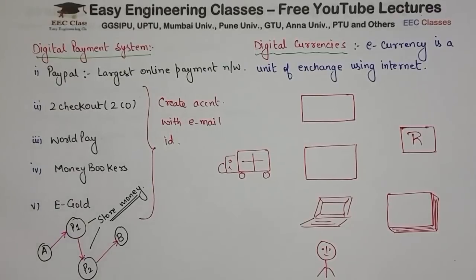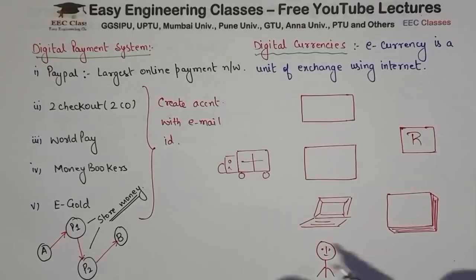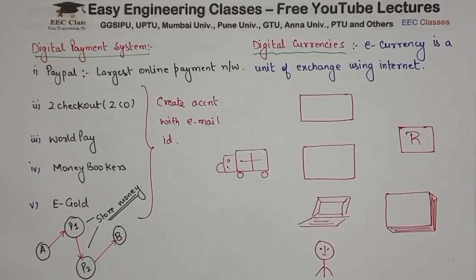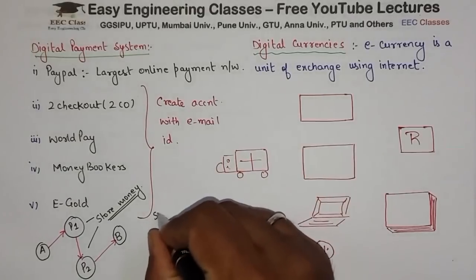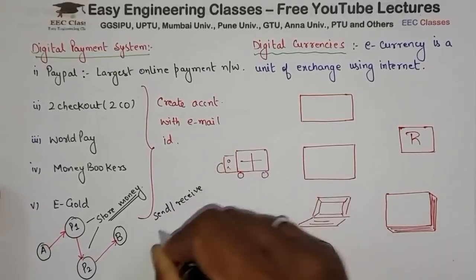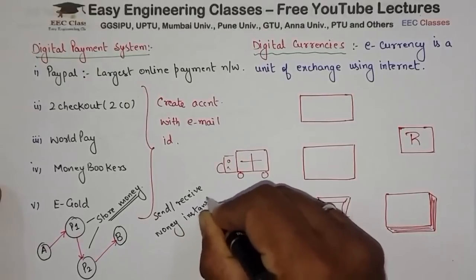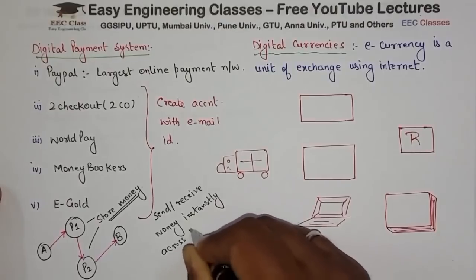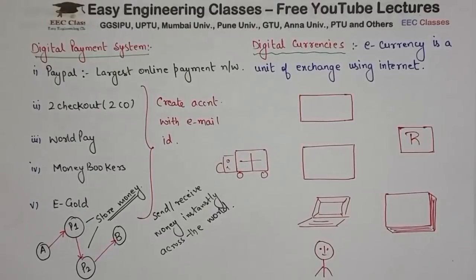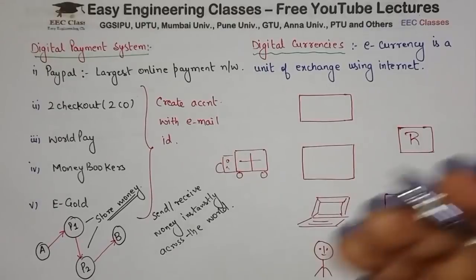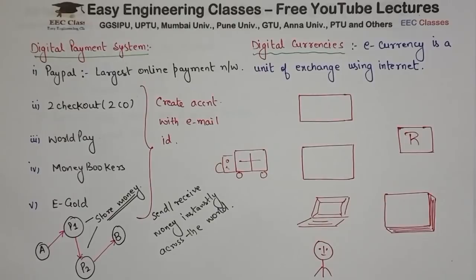Now, digital currency — what is it? It is any e-currency or electronic currency whose exchange happens over the internet. It is not actual physical currency, but you can redeem it in real currency. Its benefits include: you can send and receive money instantly across the entire world, collect real-time payments for sales of goods, and exchange dollars or gold and vice versa.